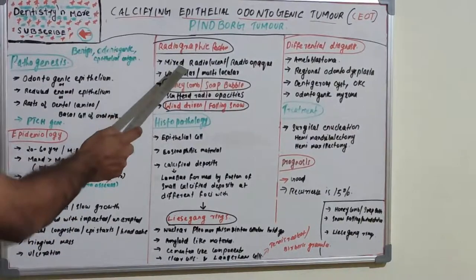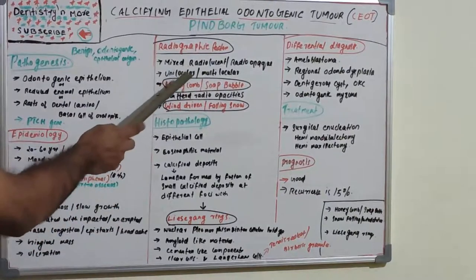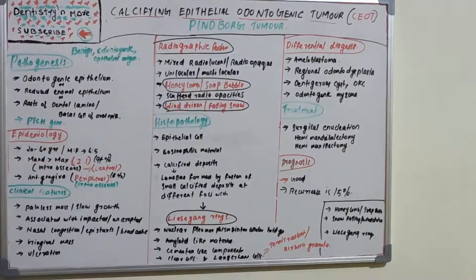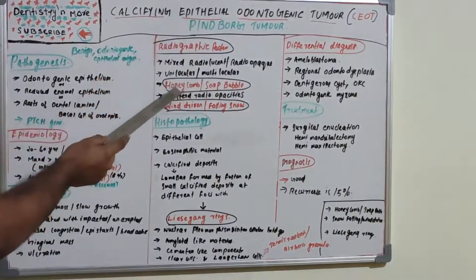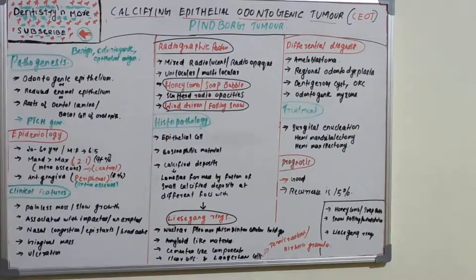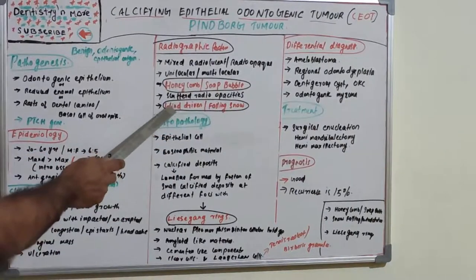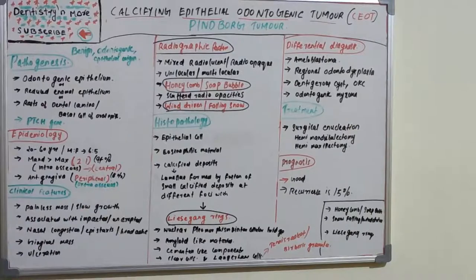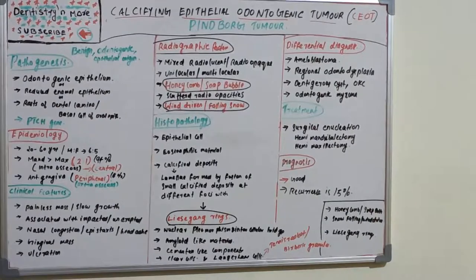In radiographic features, we can see mixed radiolucent and radio-opaque areas, and it can be unilocular or multilocular. The most striking feature of CEOT is a honeycomb or soap bubble appearance because of scattered radio-opacities. It can also appear as wind-driven or snow-falling type. Never forget these two appearances — honeycomb or soap bubble, and snow-falling or wind-driven — as key radiographic features.